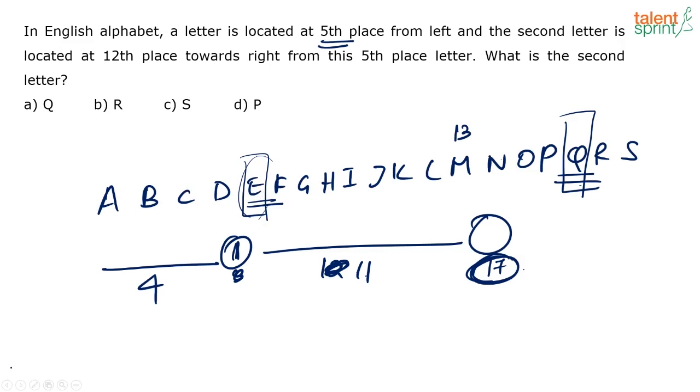You know, fifth letter from the left. Even if you write it down, you know it is E. Then twelfth letter means E plus 12. That is 5 plus 12, 17. So they are asking you for the 17th letter. You know M is 13. So which is the 17th? Q.